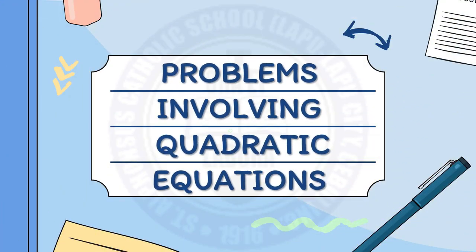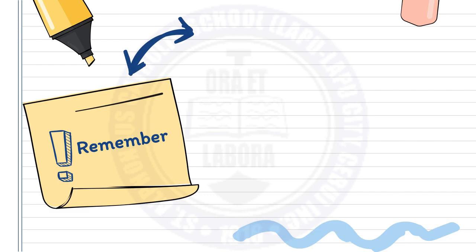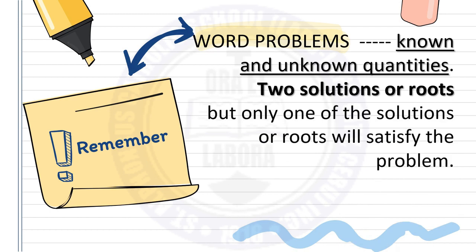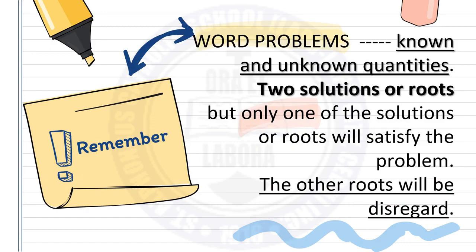Problems involving quadratic equations. When dealing with word problems, it is best to describe the situation involving known and unknown quantities. However, problems involving equations often lead to only one solution, while quadratic equations have two solutions or roots. In this scenario, only one of these solutions or roots will satisfy the problem, while the other root will be disregarded.